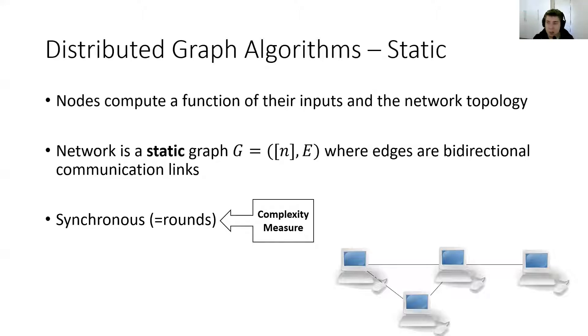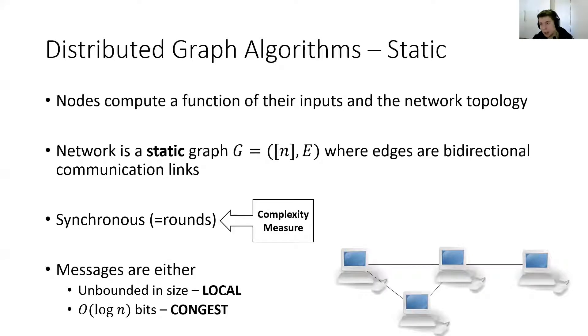In particular, we usually ignore the local computation that the nodes perform, although for our algorithms and for many others in the literature, this is not a problem. Messages can be either unbounded in size—this is the so-called local model—or just restricted to O of log n bits, and this is known as the congest model. In our work, we also focus on O of log n bit messages.